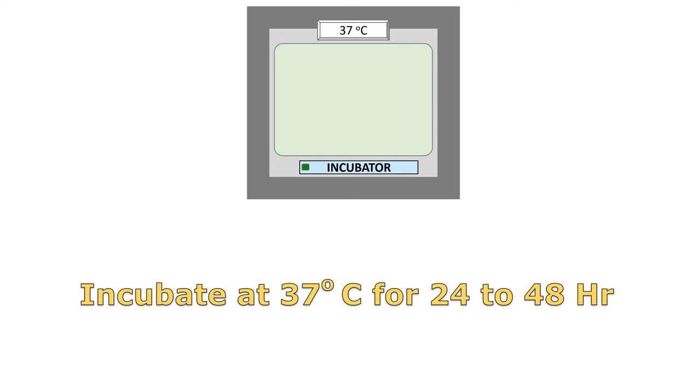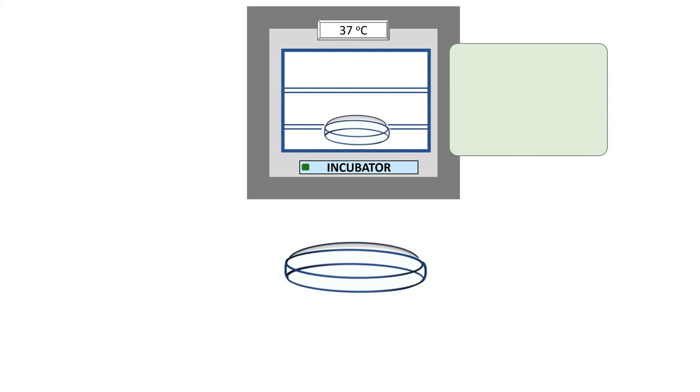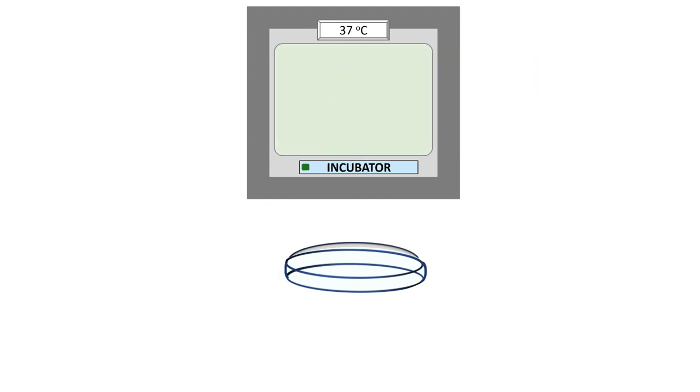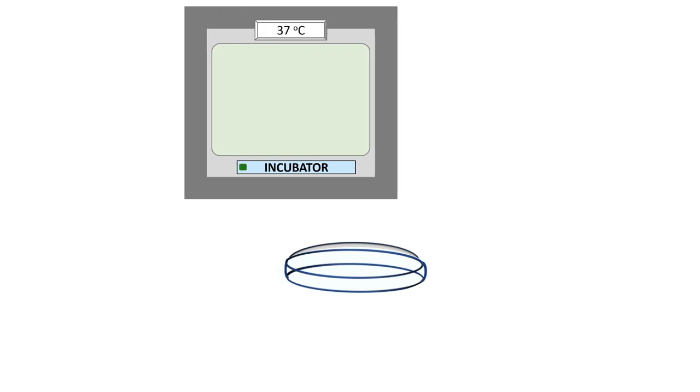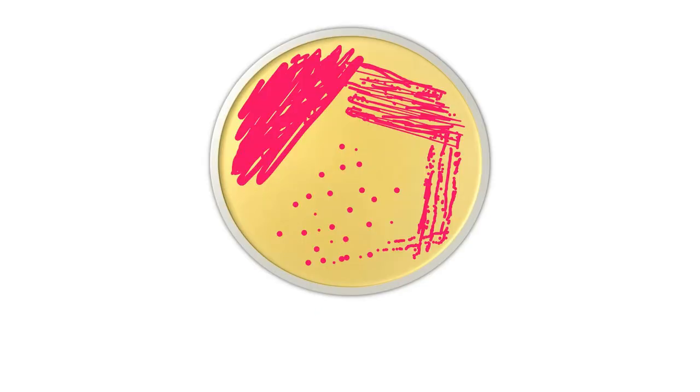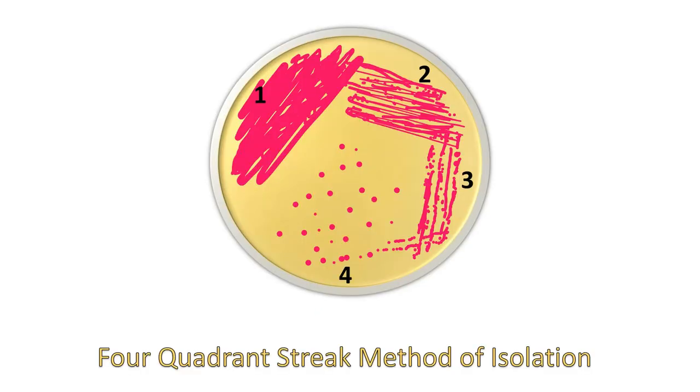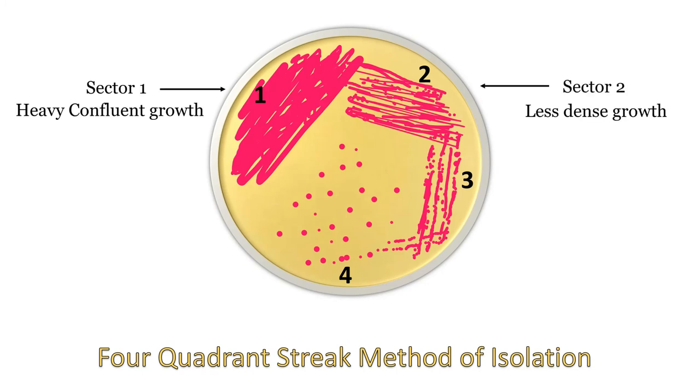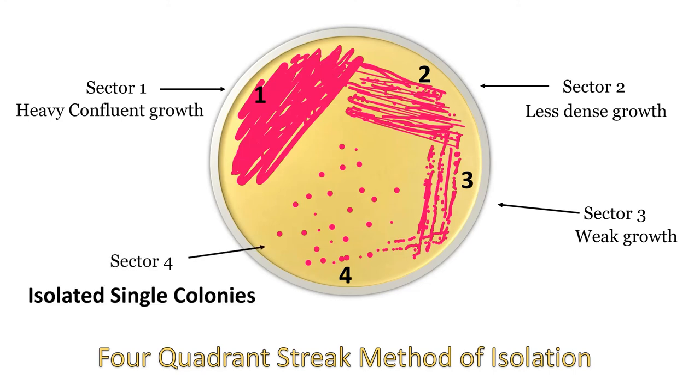After 48 hours of incubation, remove the plate from the incubator and check the growth of bacteria on the plate. After incubation, you can see the heavy confluent growth of bacteria in sector 1. In sector 2, there is less growth of bacteria whereas weak growth is seen in sector 3. Sector 4 shows the isolated single colonies as desired.